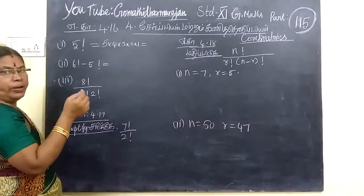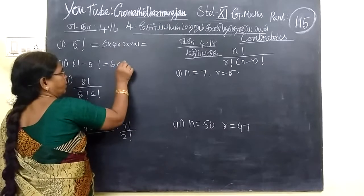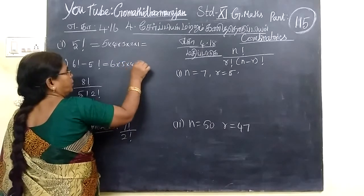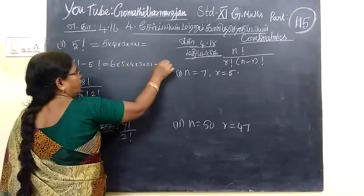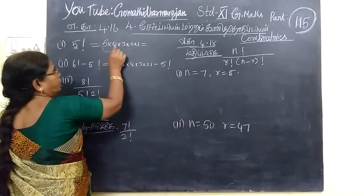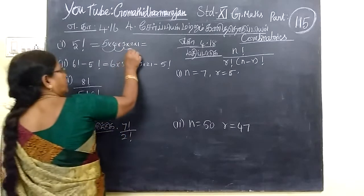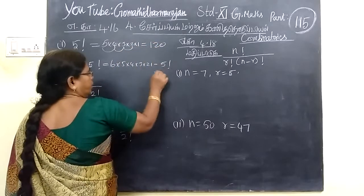6 factorial minus 5 factorial: 6 times 5 times 4 times 3 times 2 times 1, minus 5 factorial. This one, 5 factorial equals 120, then 120 times 3 times 6. 120. Then this number 120 is wrong. Times 6, 6 is the number. 720.